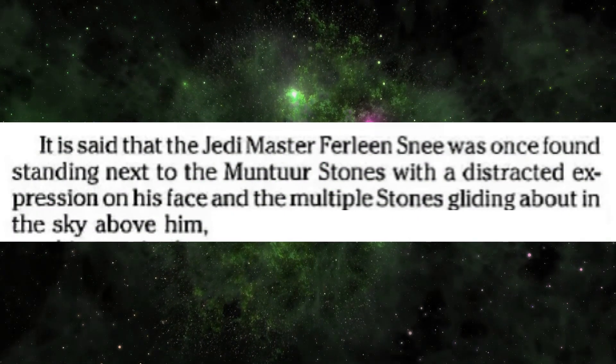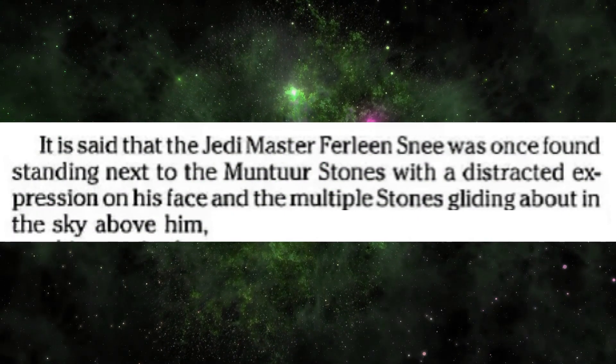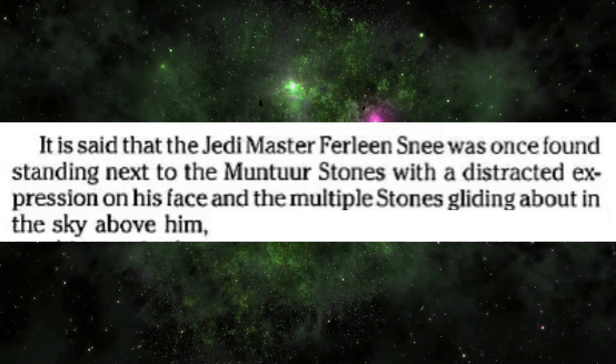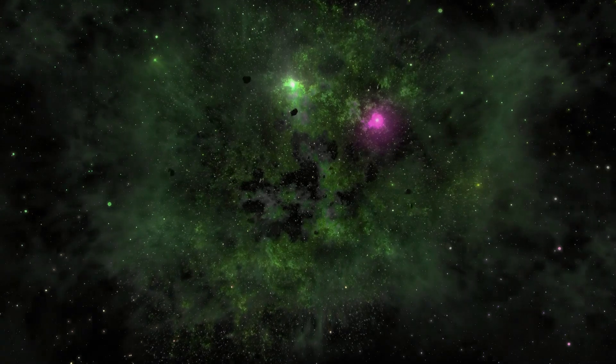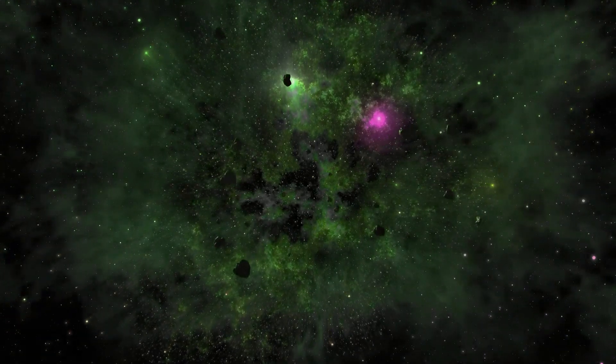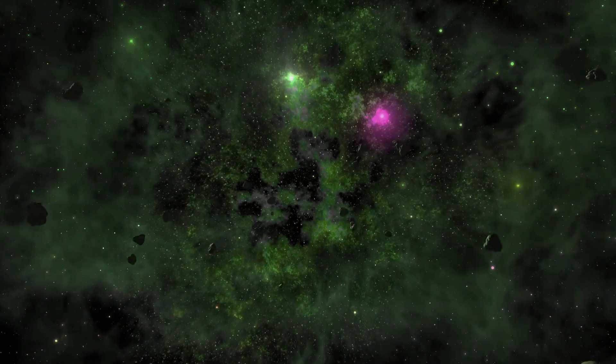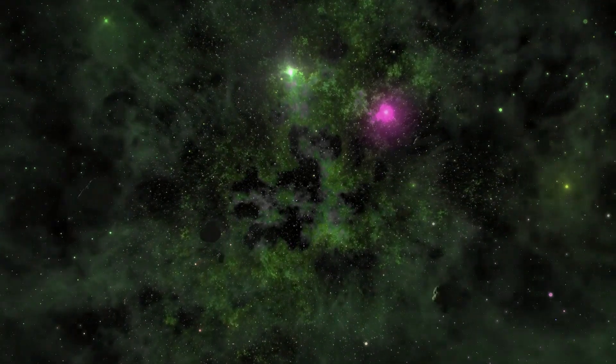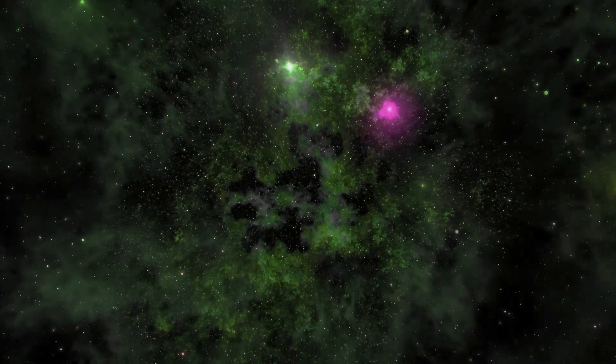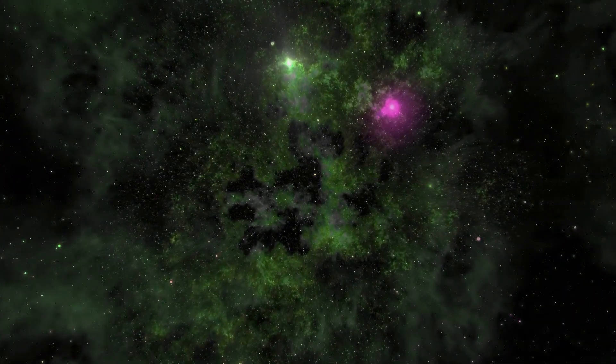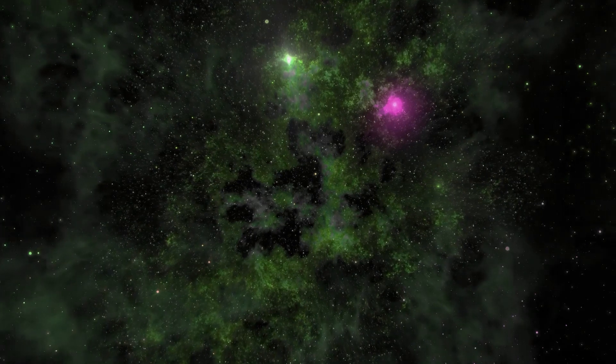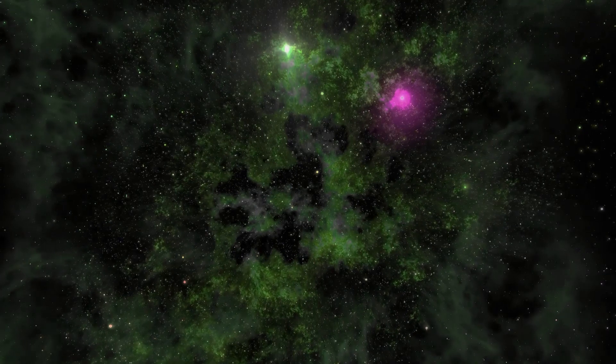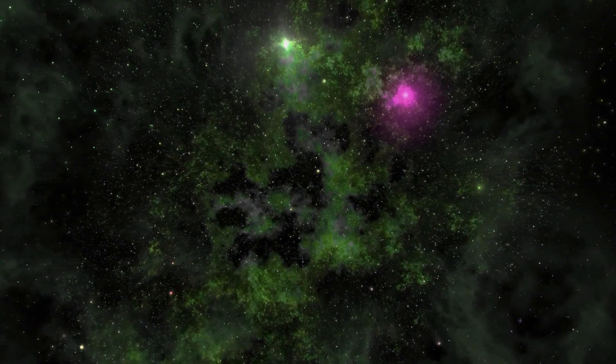Then note how Furlien Snee was seen casually spinning all seven of the stones above his head, with a distracted expression on his face. If after 200 years of decrease, Yoda lost the ability to lift one more stone, and Snee could lift one more stone than Yoda ever could in his prime with casual ease, then Snee's telekinetic power advantage on Yoda must be at least the equivalent of the power loss of a 200-year decrease.